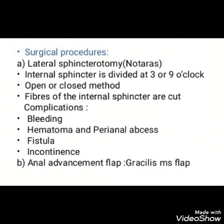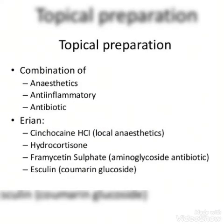The other procedure is fissurectomy with local advancement flap, which is generally indicated in chronic non-healing fissure. After excision of the fissure, the resulting defect in the anal canal is closed by a small advancement flap. Topical preparations like a combination of anaesthetic and antibiotics can also be given.